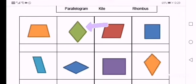So the next shape will be a rhombus. A rhombus is a shape that has four sides that are all the same length. It almost looks like a square that's turned on its side. So that's a rhombus.